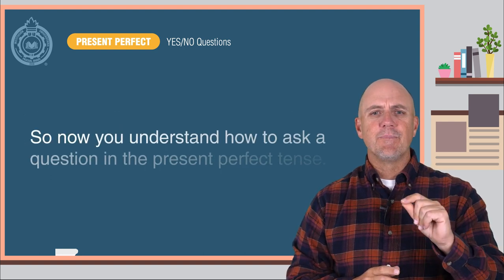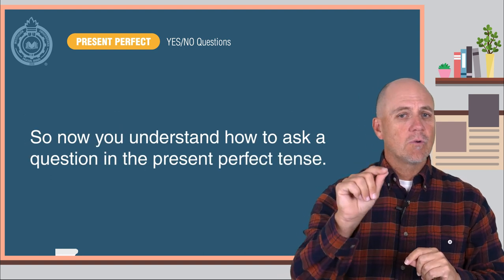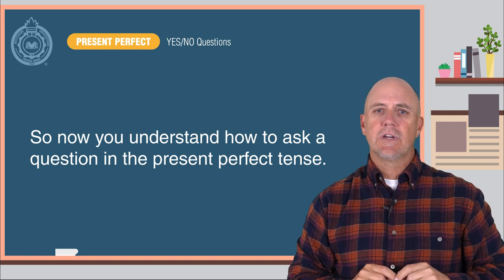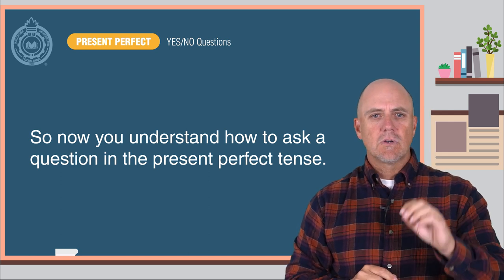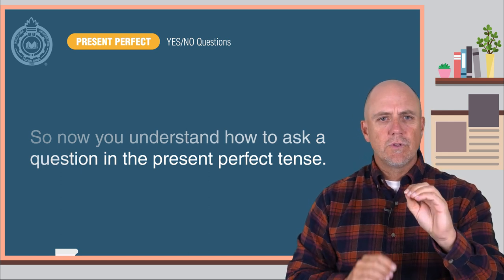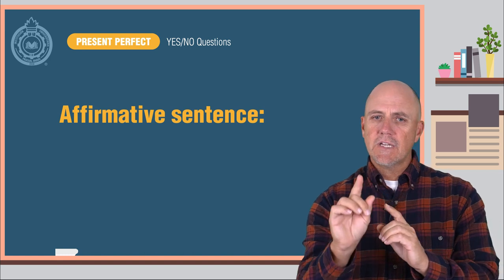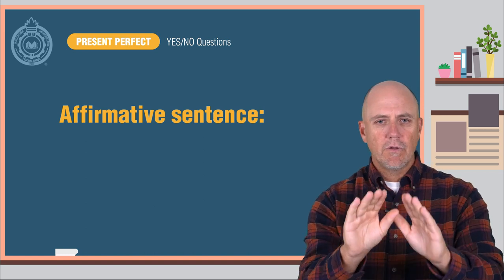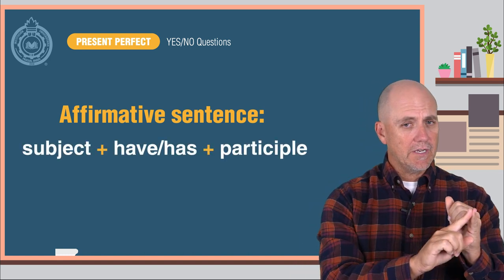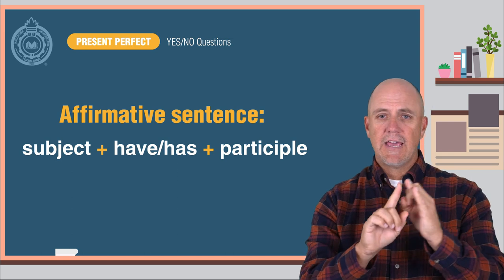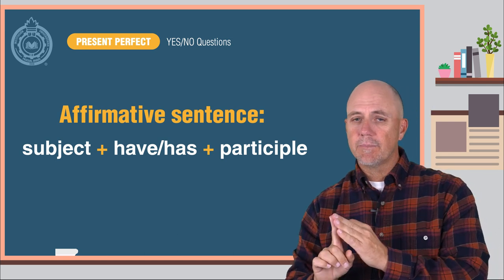Now you understand how to ask a question in the present perfect tense. Let's review the present perfect. For an affirmative sentence, you follow this formula: the subject, plus have or has, plus the participle.